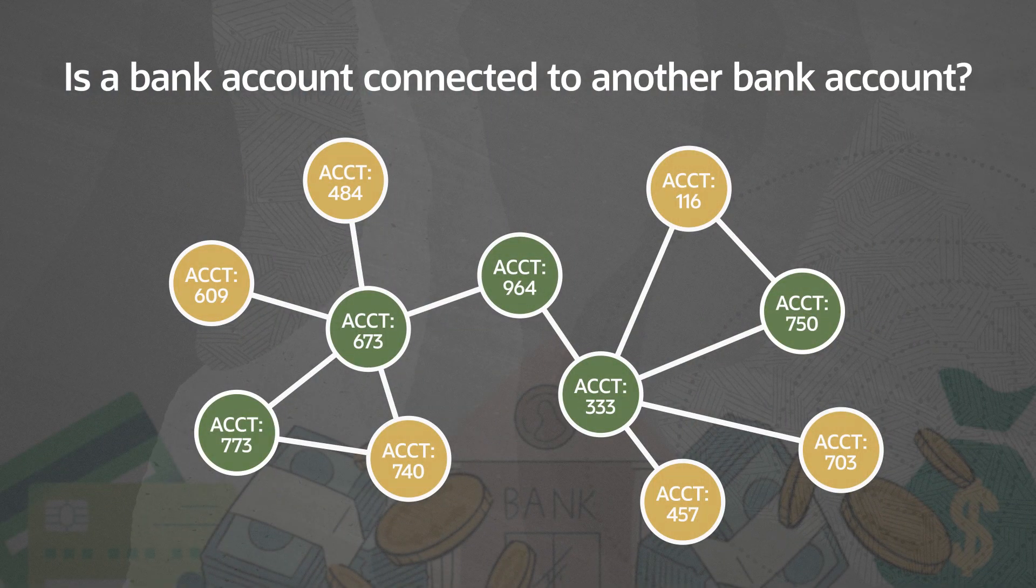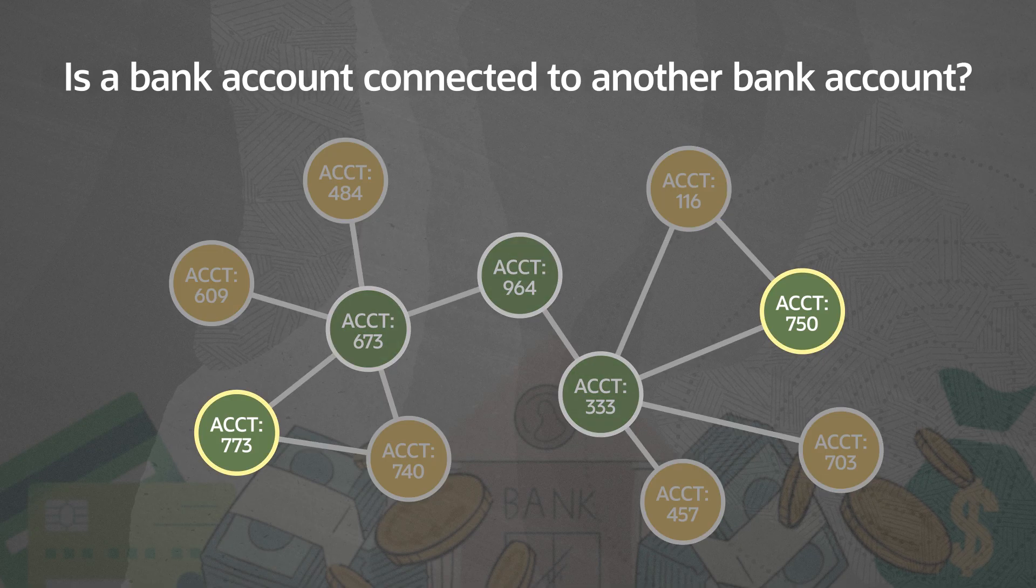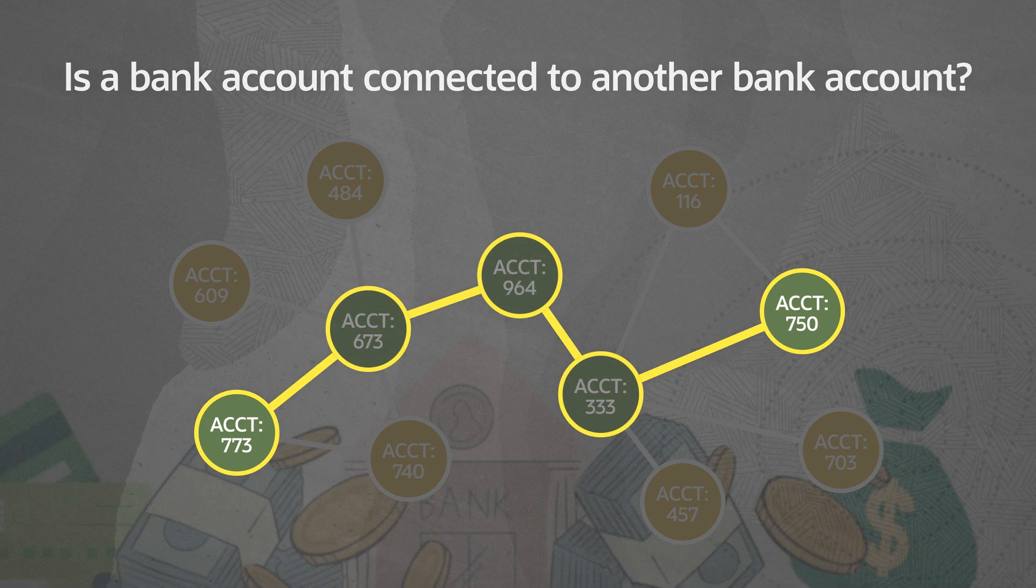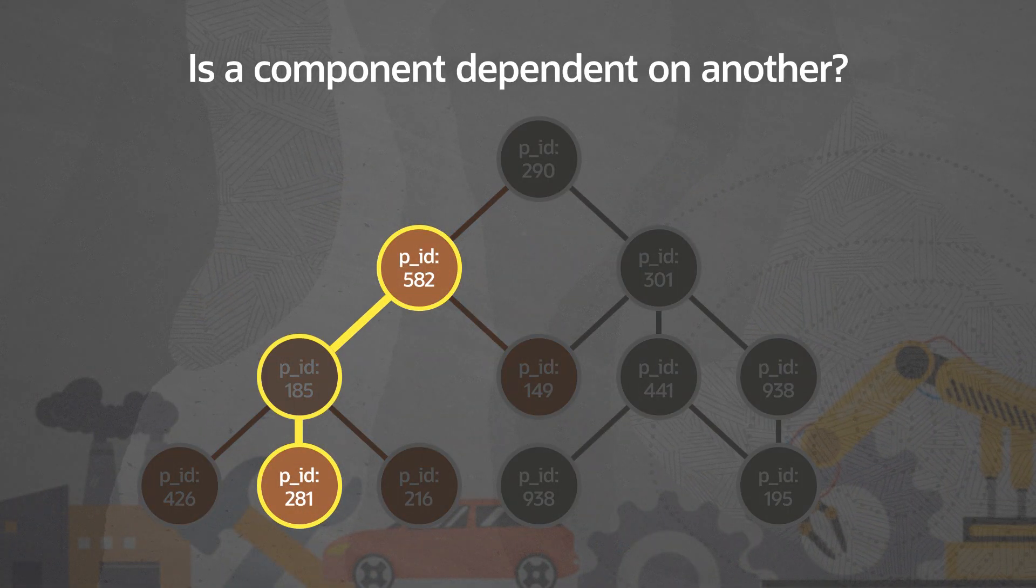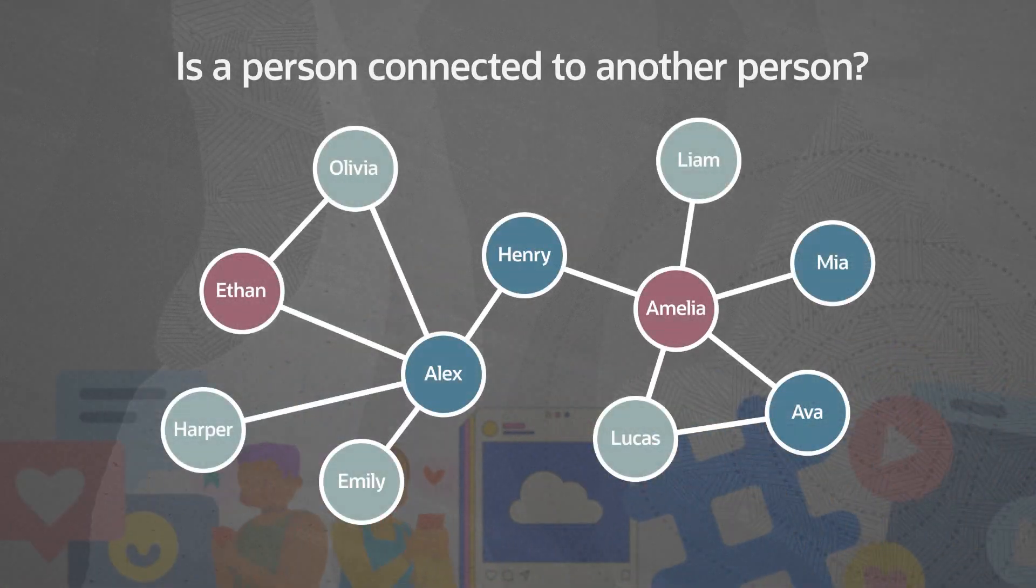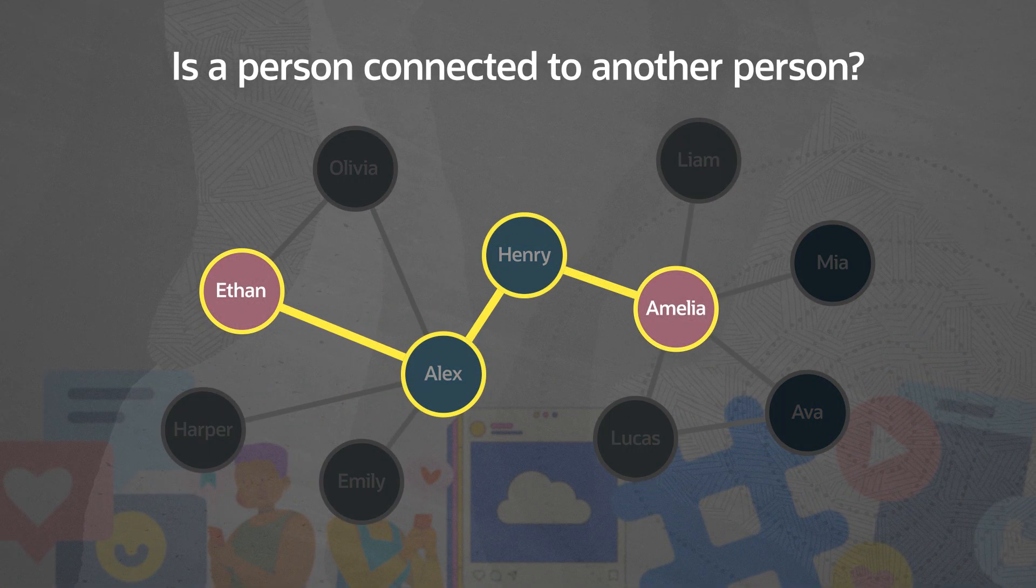For instance, in financial services, this would be is a bank account connected to another? In manufacturing, it would be is a component dependent on another? And in social network analysis, it would be is one person connected to another?